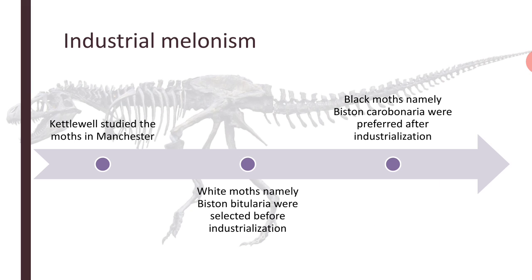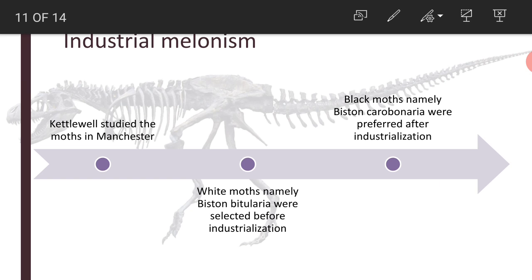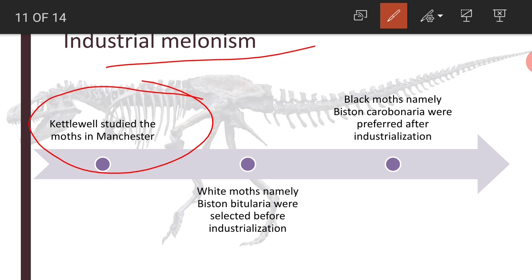The natural selection concept was explained by Kettlewell, taking Biston betularia and Biston carbonaria moths into consideration. The change brought about by industrialization in the color of moths is titled Industrial Melanism. Kettlewell studied the moths in Manchester, a city in Britain. Before industrialization, there were two types of moths: the white moth, Biston betularia, and the black moth, Biston carbonaria. Remember — carbon means black, just as charcoal is black because it contains carbon.